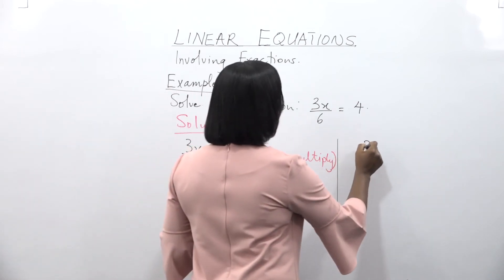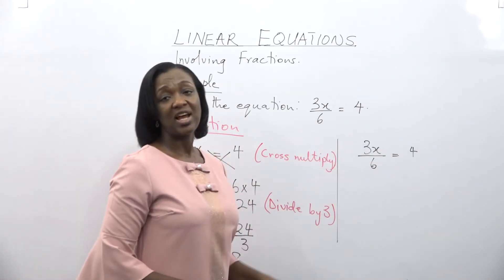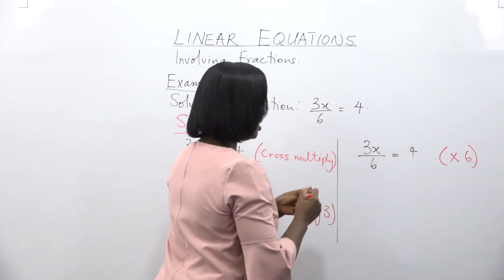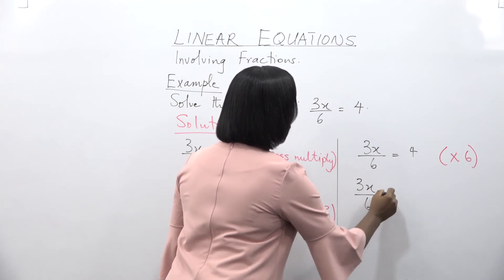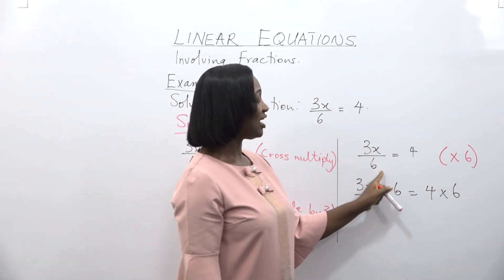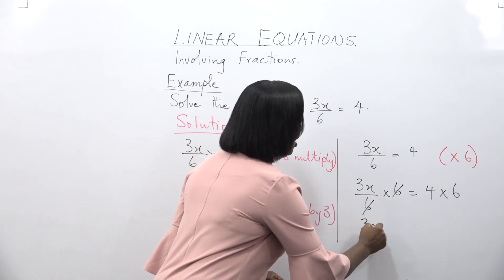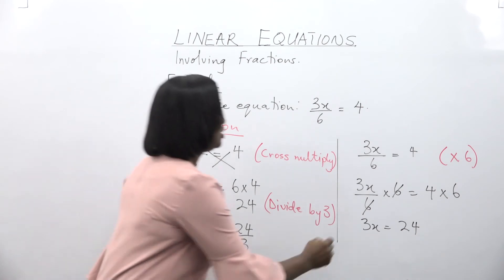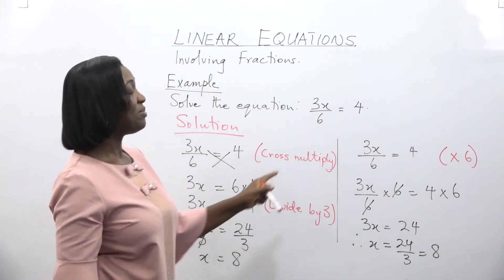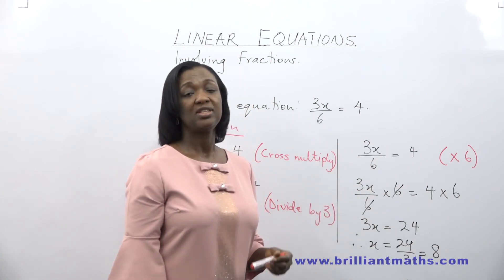The second method: 3x over 6 is equal to 4. Instead of cross multiplying, we multiply both sides of the equation by 6. So 6 times 3x over 6, is equal to 4 times 6. The 6 cancels out 6, giving us 3x is equal to 24 — just like before. So x is equal to 24 over 3, which is 8. Whichever method you use — cross multiplying or multiplying both sides by the denominator or LCM — you should get the same answer.